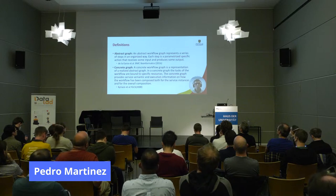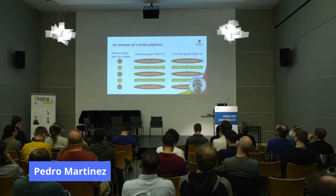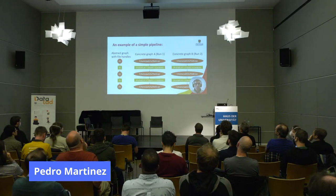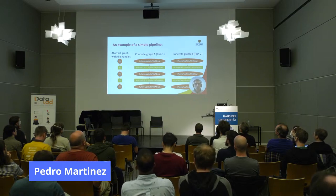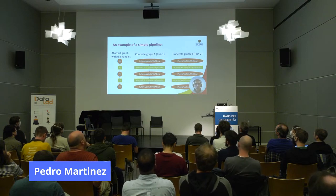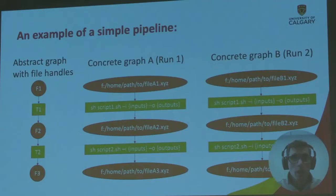DataLad is the key component that we use to materialize these concrete workflow graphs. On the left we have an abstract graph composed of three files and two tasks. For execution, the file handles are replaced by file paths and each task receives command information to perform transformations of these files. On the right we can see two concrete graphs after they have been realized, but in general we could have multiple concrete instances of an abstract graph. Each concrete graph, either partial or complete, will be produced by a pipeline run, so these two terms are often used interchangeably.